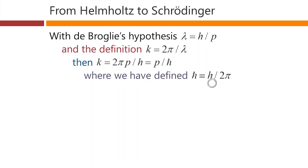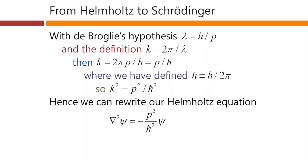And h bar, as we've said before, is h over 2 pi. It's a convenient unit to use often. So with all of this, k squared is equal to p squared over h bar squared. Hence, using de Broglie's hypothesis and choosing to write things in terms of k's instead of lambdas, we have our proposed Helmholtz equation is del squared psi equals minus p squared over h bar squared psi.